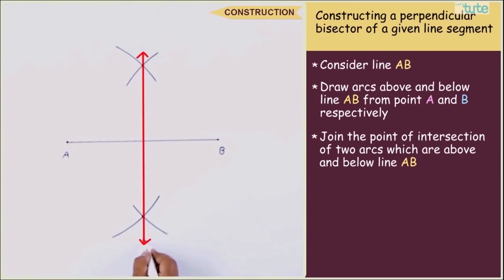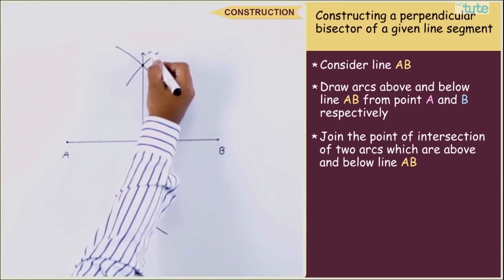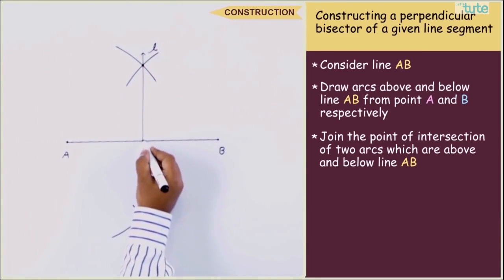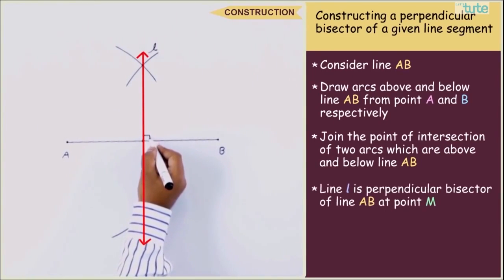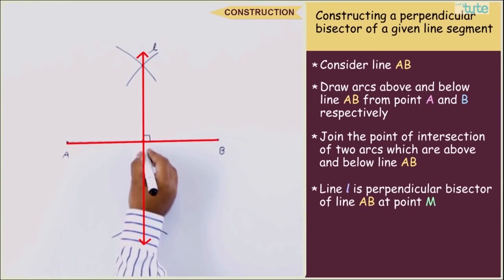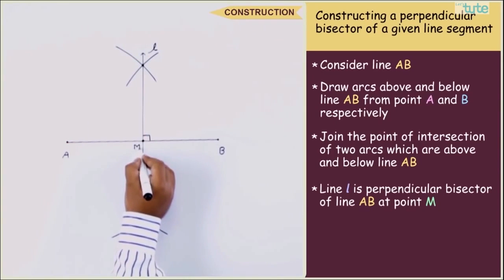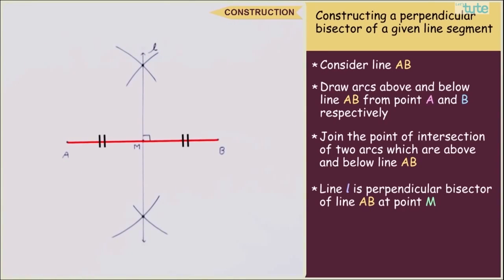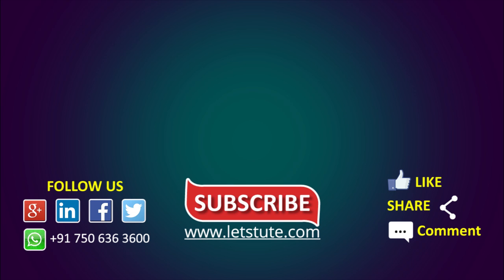Let the straight line be called as line L. Now we can see that line L is perpendicular bisector of line AB at point M and AM is equal to BM. Now we know how to construct a perpendicular bisector of a given line segment.